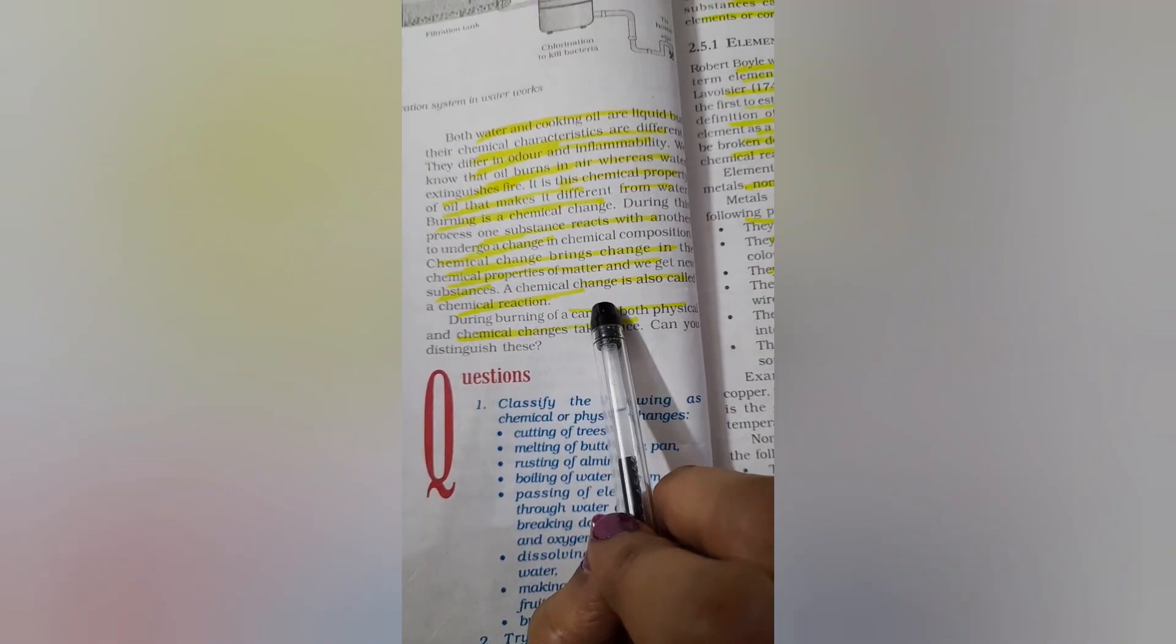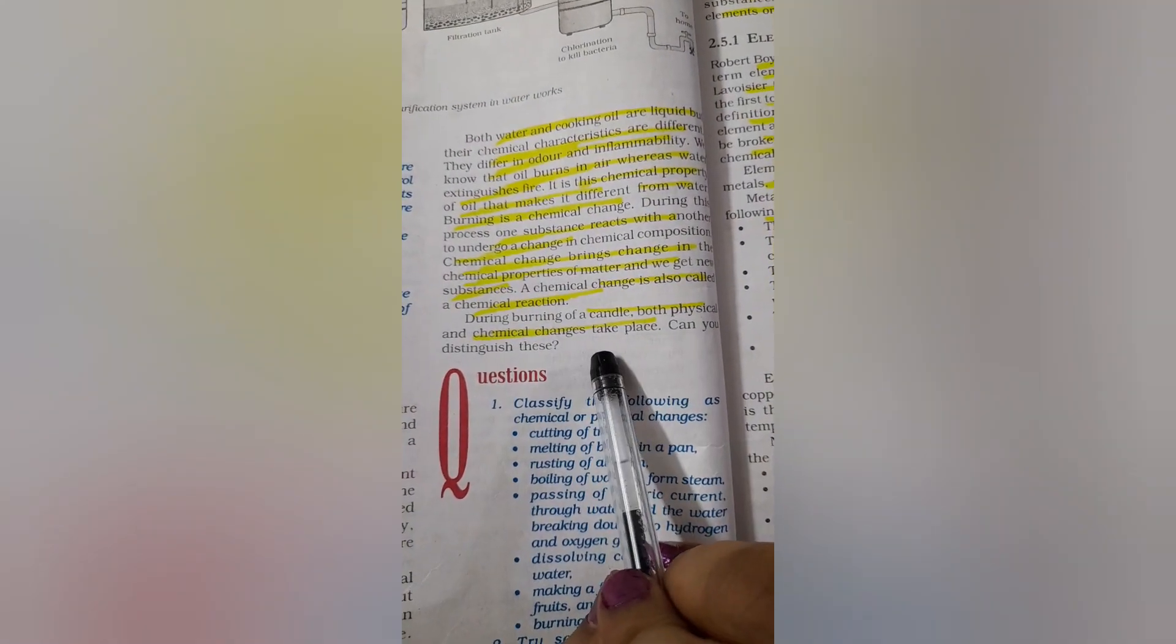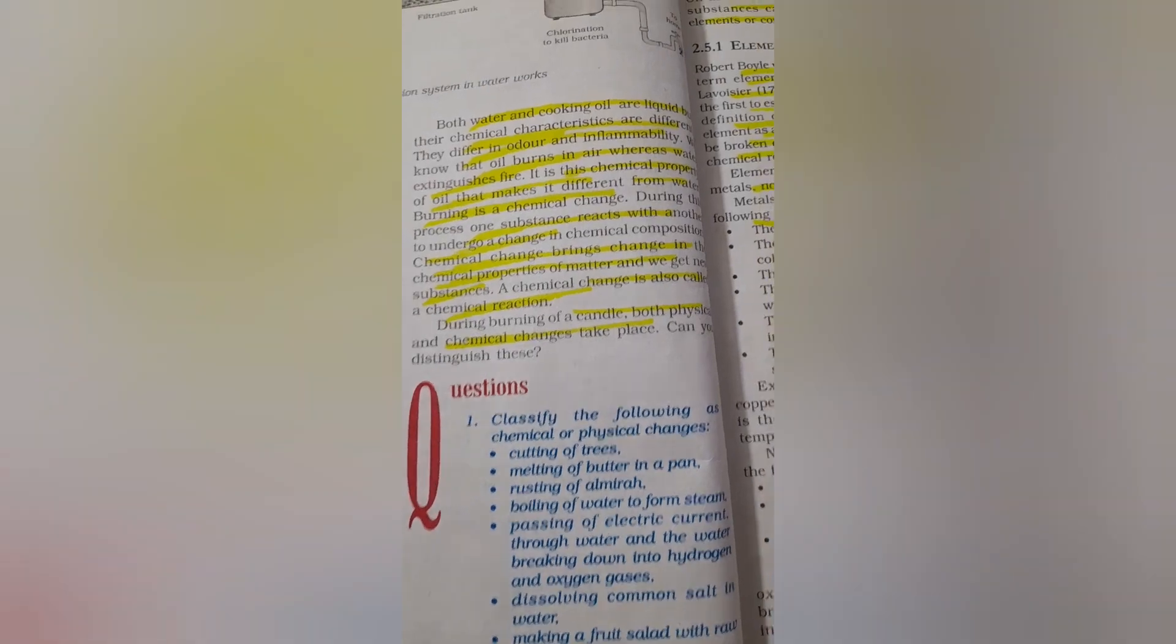That is why we call a chemical change a chemical reaction. What about burning of a candle? Both physical and chemical change take place. You can think how does it happen? In another session we will try to find out the answer for that.